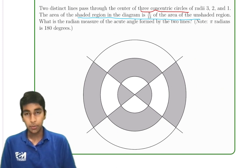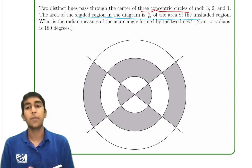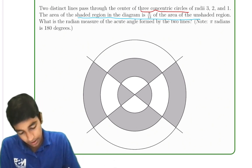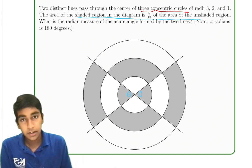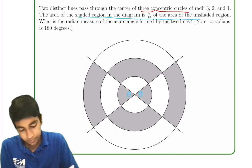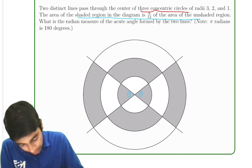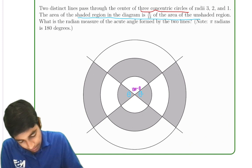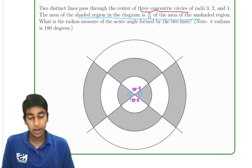Let's do this with degrees first, and then convert to radians. So if this angle is theta, then this region over here will be 180 minus theta, this will be 180 minus theta, minus theta.